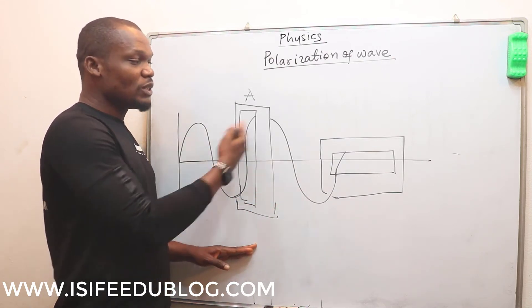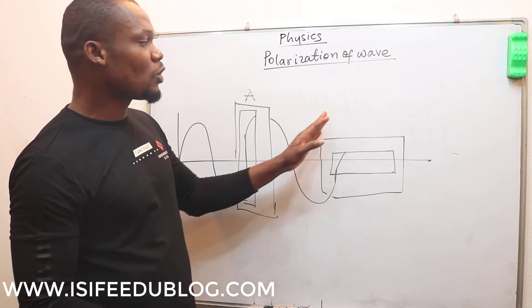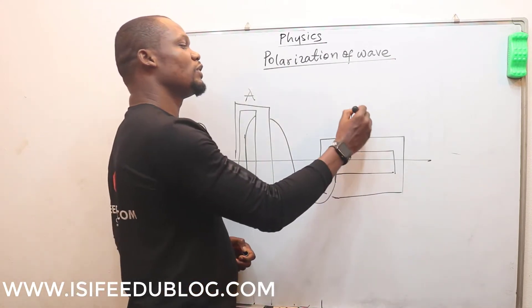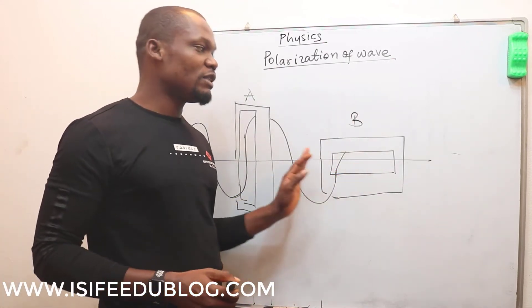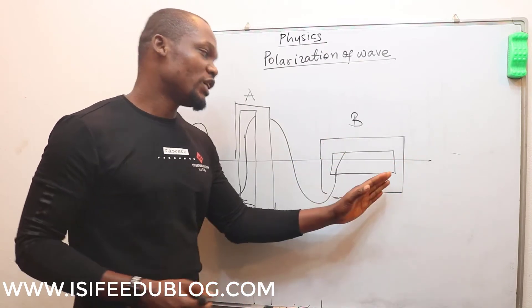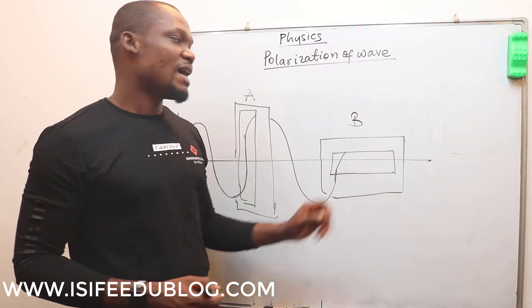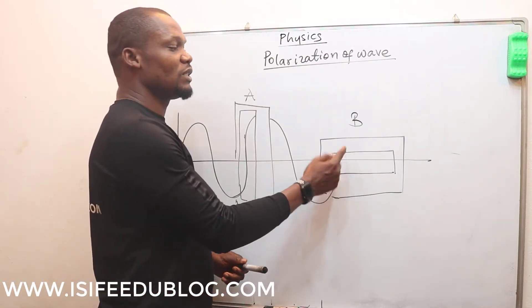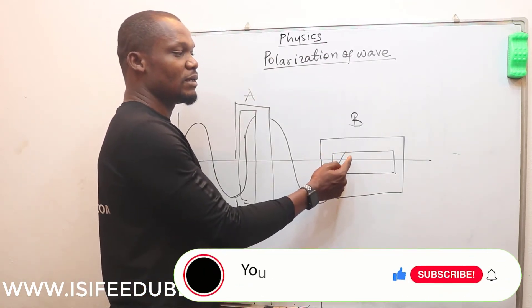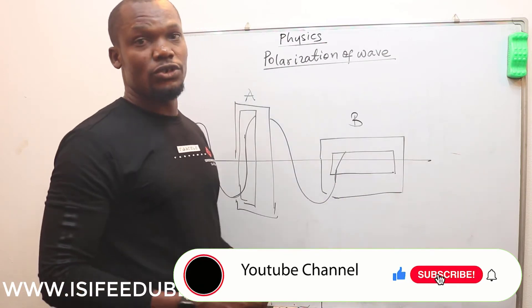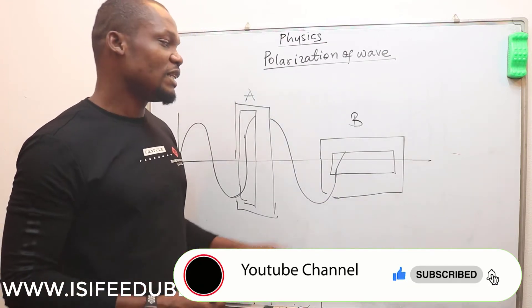But when you come to the second point, we call it point B, you can see that the plane of this cardboard paper has been changed from vertical to horizontal plane. And hence, this wave stops here. The wave does not continue and hence we say that the wave has been polarized at point B.